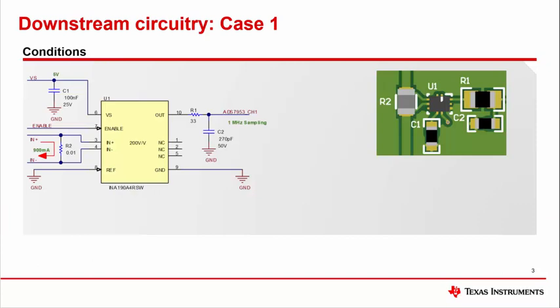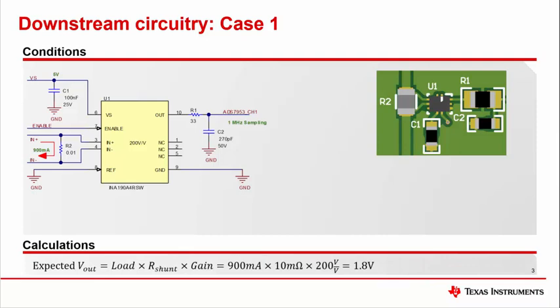To start off, let's begin with this case where we have an INA190 with a 200 volt per volt gain and are attempting to measure 900 milliamps across a 10 milli-ohm shunt. According to our calculations, our output should be 1.8 volts. However, a quick glance at a single ADC reading shows our measurement is off.